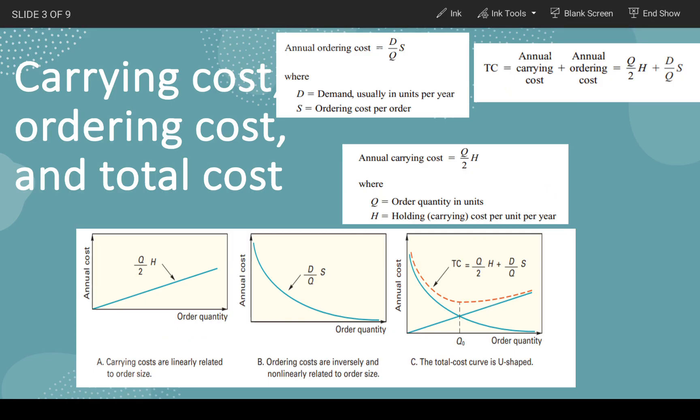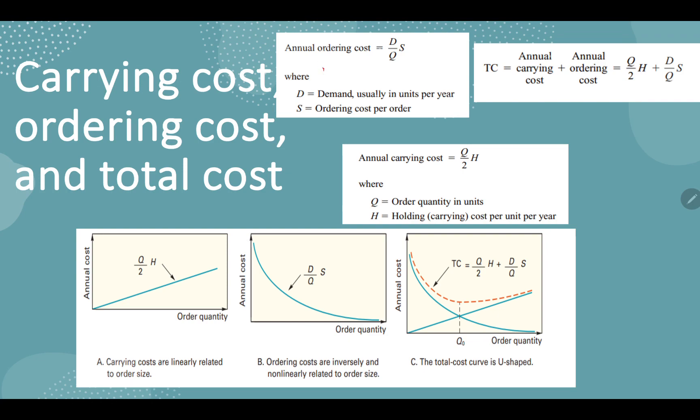Let's see these three basic formulas which are involved. This formula is for annual ordering cost. Capital D is the annual demand, the total number of units that you require in a year. S is your ordering cost per order, and Q is the optimum quantity.